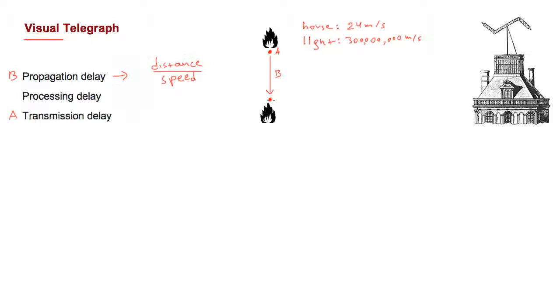And finally, we have our processing delay, which is c right here, which is the time it will take us to detect and verify that the message is being transmitted. And one important takeaway here is that the propagation delay is almost negligible for visual signals because the speed of light is so fast. So really, we are bound by the speed of the processing and transmission delays, which is to say that the slowest parts are actually our operators on both ends because they need to light a fire and interpret the signal.